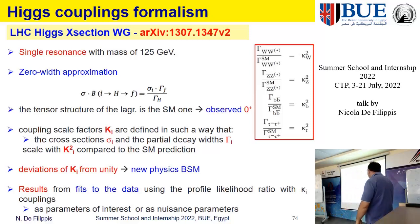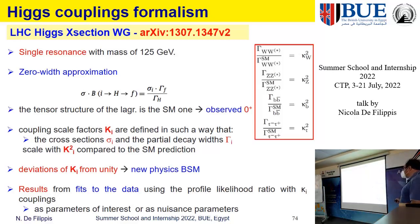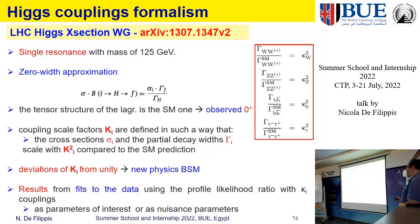The Higgs couples to fermions, to gauge bosons, and also to itself. There is a formalism called the Kappa framework which parameterizes the cross-section for the production of the Higgs and the decay in terms of the production cross-section times the partial width for the decay into the final state, divided by the total width — essentially the branching fraction under the hypothesis of the zero width.